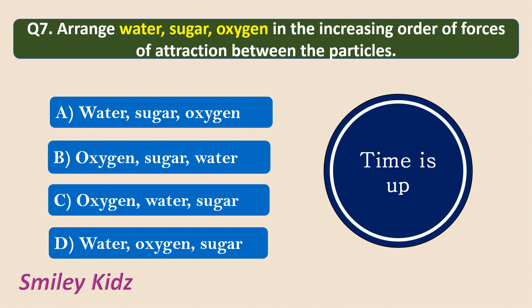Your time is up and the correct answer is oxygen, water, sugar. We know that the force of attraction between the particles is more in solids and less in gases. Increasing order means ascending order, so first we give the item with the least force of attraction, that is oxygen (gas), then water (liquid), then sugar (solid). So, gases, liquids, solids — that is oxygen, water, sugar — is our increasing order of forces of attraction between the particles.